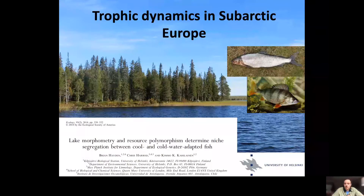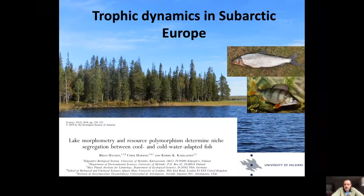We're going to have one data set that we're going to do all of this work with. We should now be seeing trophic dynamics in subarctic Europe. This is an area I worked in for a couple of years as a postdoc and did a lot of research looking at interactions between different fish species. Here on the top we have the Eurasian whitefish, and below we have the Eurasian perch.